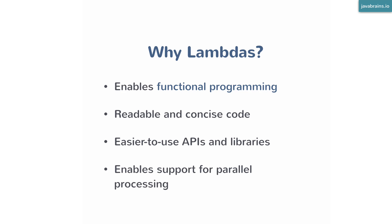Easier to use APIs and libraries — we have the example of the collection API. As more and more libraries use lambdas to enable this functional programming model, you can have better APIs compared to the old Java 7 way of doing things, where you had to have a class or an object in order to pass behavior to any particular library.